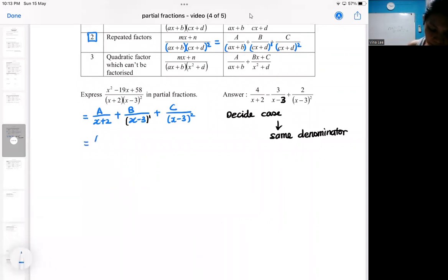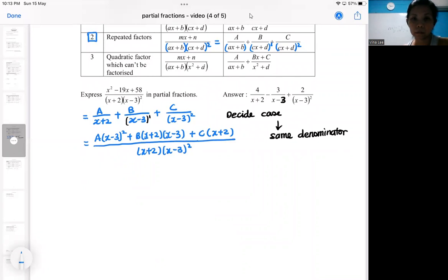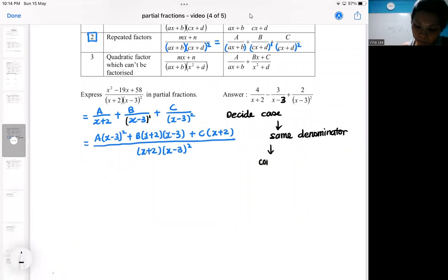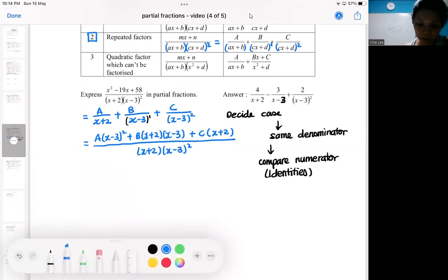Same procedure, make same denominator. After that, we compare the numerator. So when you compare the numerator, your identity appears. The original numerator and your current numerator.